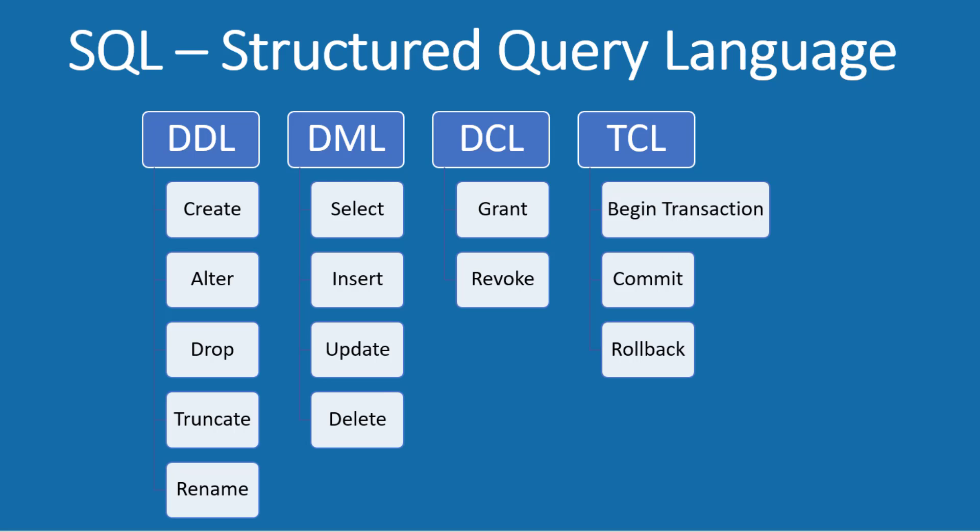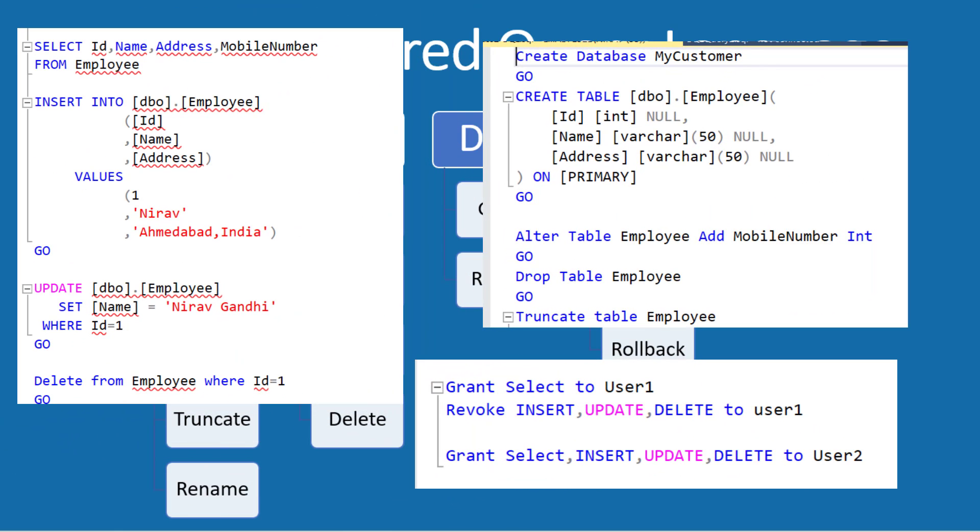TCL is Transaction Control Language. The commands are begin transaction, commit transaction, and rollback transaction. The primary benefit of using TCL commands is to maintain data integrity inside the database. In a future video, I will provide complete details about transactions in a database. And here are some examples of all the commands.